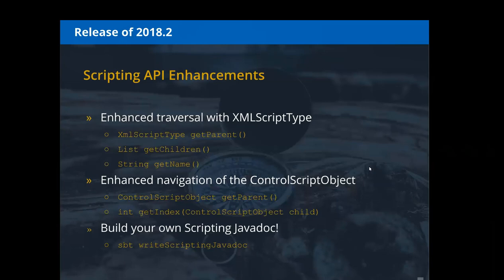On the admin side of the scripting API, the scripting API Javadoc can now be built locally. If you want to build it yourself, you can just run 'sbt writeScriptingJavadoc' and it will output a local copy. You can also access it from the releases tab — each release will have the latest updated scripting Javadoc available.